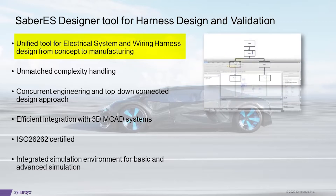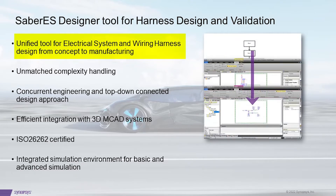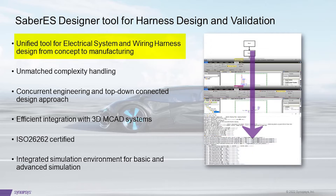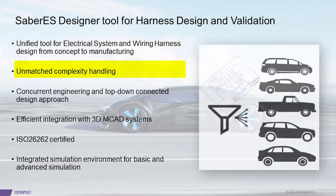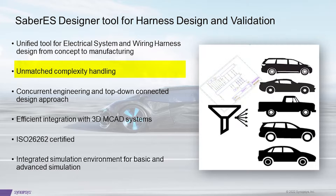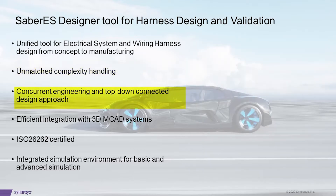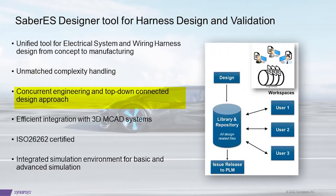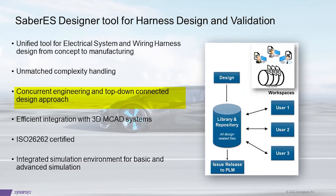Designing and validating a modern vehicle wiring system is a significant and challenging task. Sabre ES Designer provides an efficient solution to do this, from concept to manufacturing. Wiring harness is quite complex in nature. Sabre ES Designer handles system-wide design variants and enables you to design wiring harness from a variety of complex system and vehicle models. It supports concurrent engineering by offering robust check-in and check-out from a single design database, and maintains data integrity through top-down connected design flow.